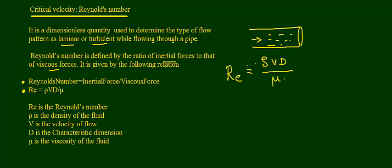This equation was obtained by Osborne Reynolds in 1883. He conducted a number of experiments and found that Reynolds number depends upon the density of the fluid, velocity of the fluid, characteristic dimension, and viscosity. If you take the units of all these terms ρVd/μ, you will find it does not have a unit, confirming that Reynolds number is a dimensionless quantity.